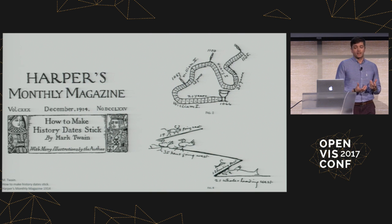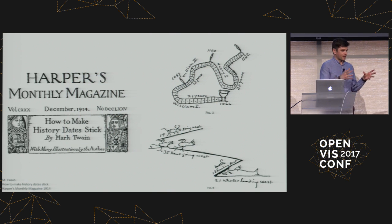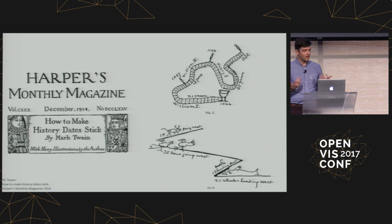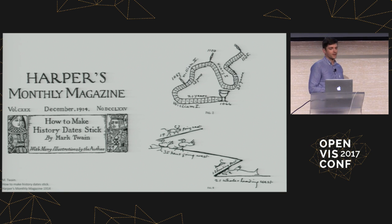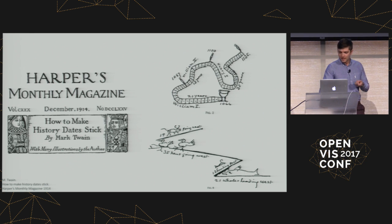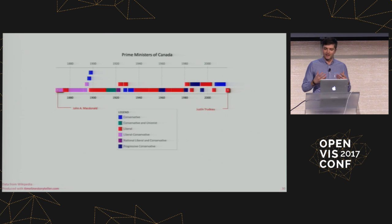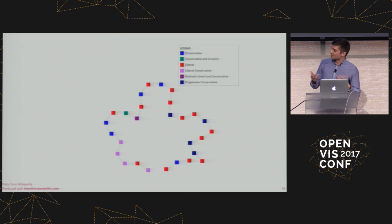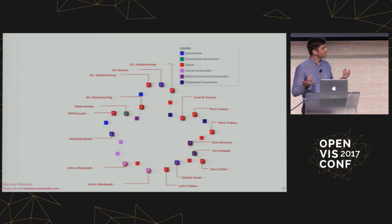The last representation I want to talk about is much less restrained by any particular shape. These are very playful curve timelines drawn by Mark Twain over a century ago — he published an article in Harper's Magazine about using these shapes as a way to remember dates. I wondered if I could use this approach to finally remember the succession of Canadian prime ministers, if they resemble a shape that looks a bit like a maple leaf. Maybe.